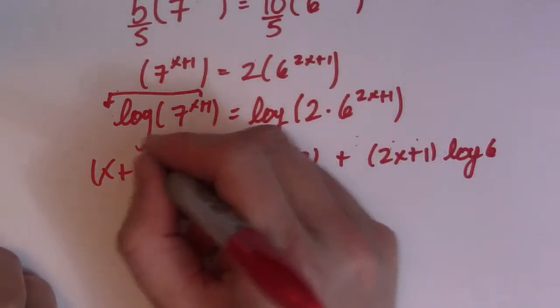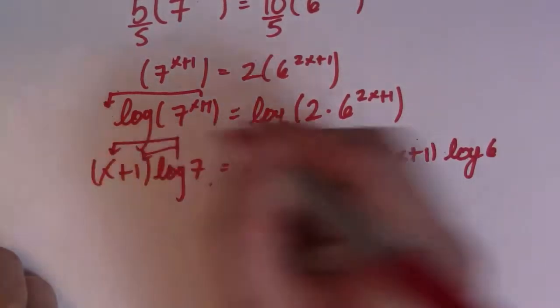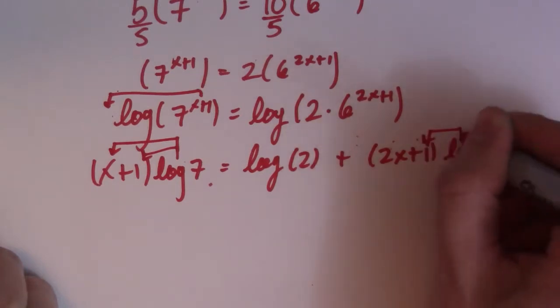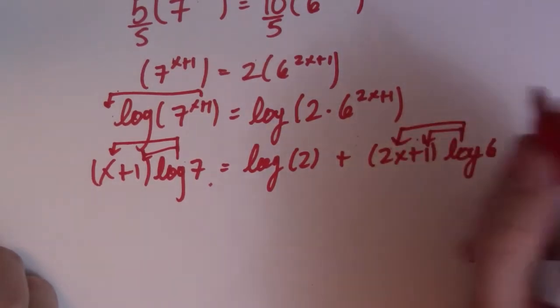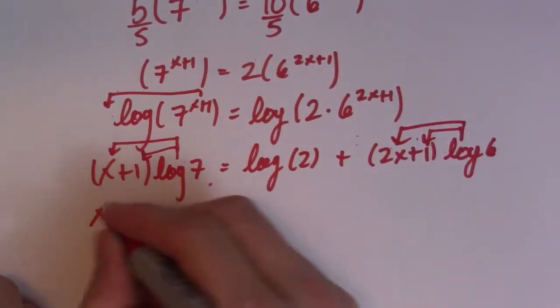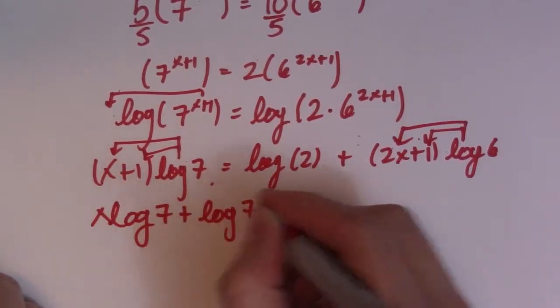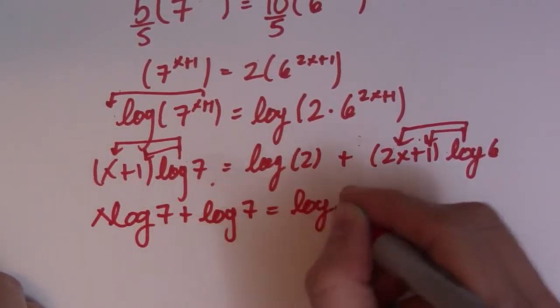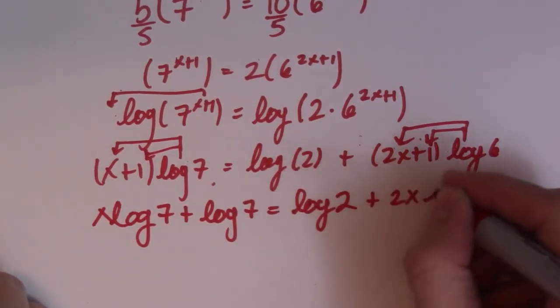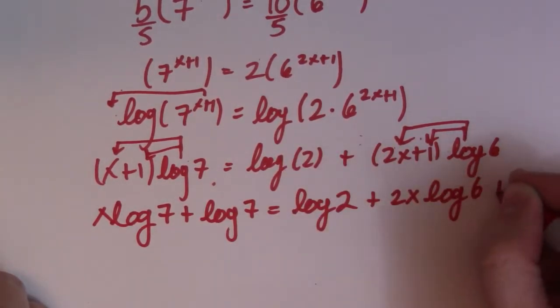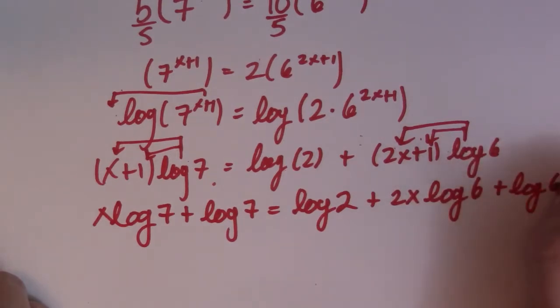So now I have two distributions. This will make this one a little bit harder. So I got two distributions this time. The exponents make that situation. So I have log x log of 7 plus log of 7. Log of 2 plus 2x log of 6 plus log of 6.